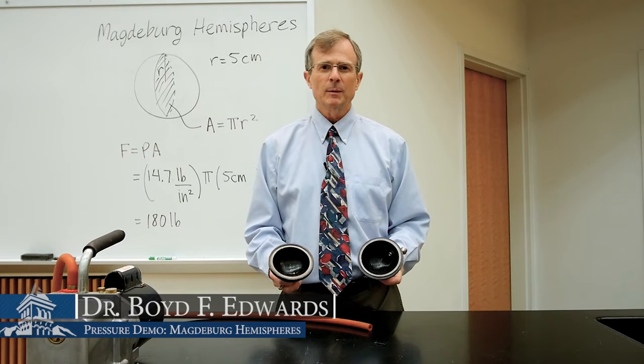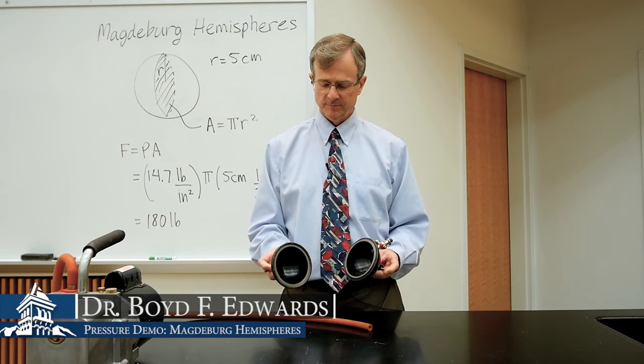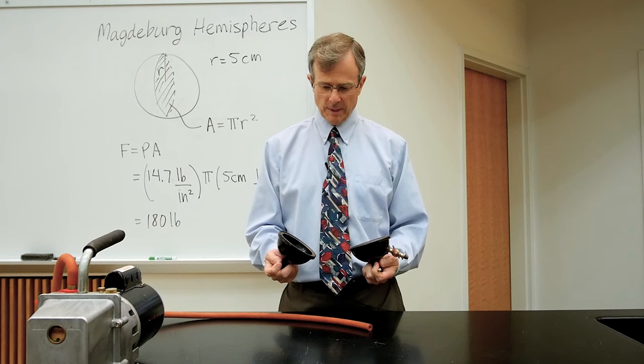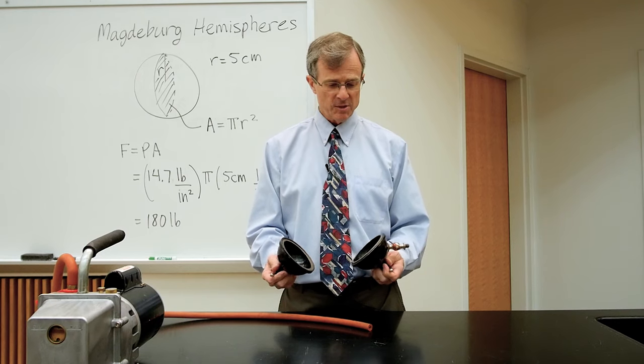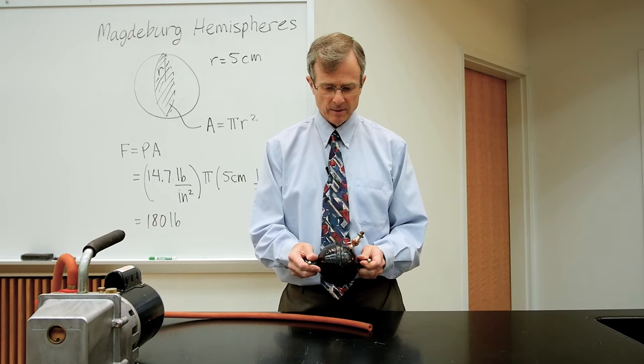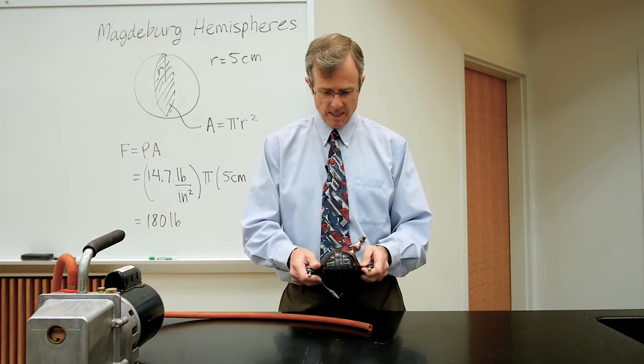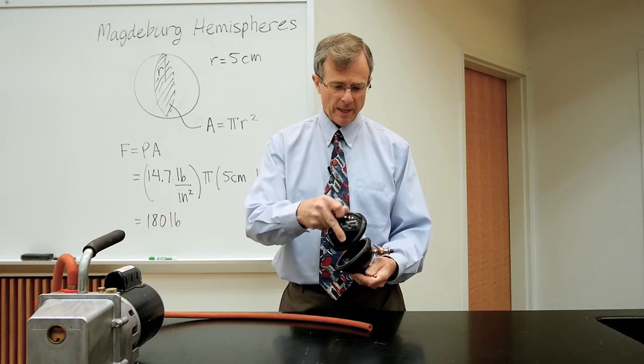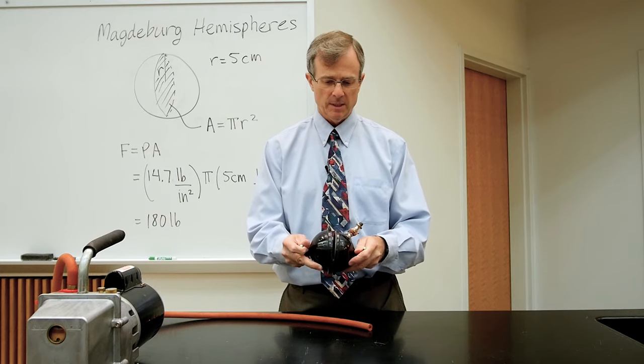These are the so-called Magdeburg hemispheres. They're just cast iron hemispheres that mate together, and there's a little bit of wax in here that allows them to seal very well together.